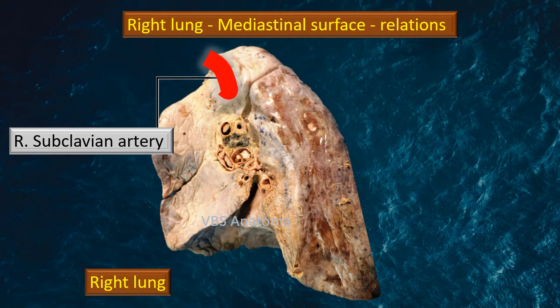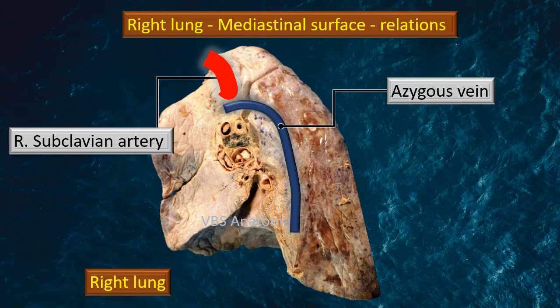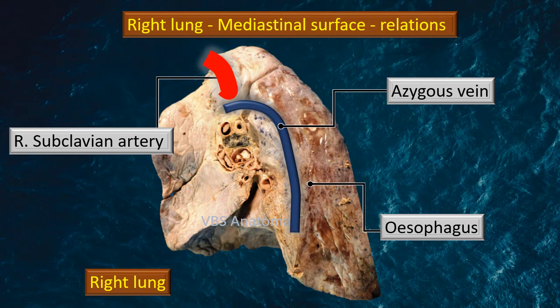Right lung mediastinal surface relations. On the medial surface, the mediastinal area: shown in a red thick area is the right subclavian artery — its impression is on the lung, making it a very important relation, particularly in the upper part above the hilar region. Next, that blue structure is the azygos vein. Because we are on the right side, that is the azygos vein. See how it arches upwards and goes above the hilum of the lung to join the superior vena cava. Behind the azygos vein, a small part of the descending oesophagus is also related.